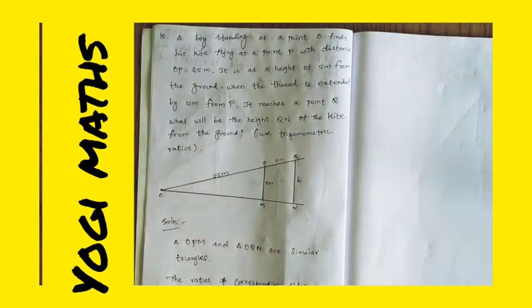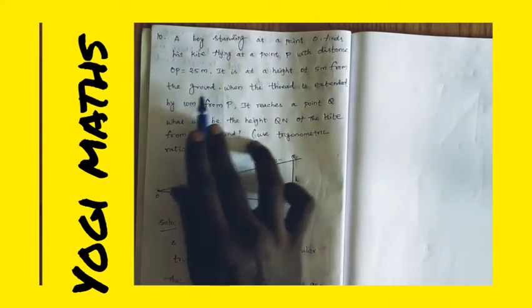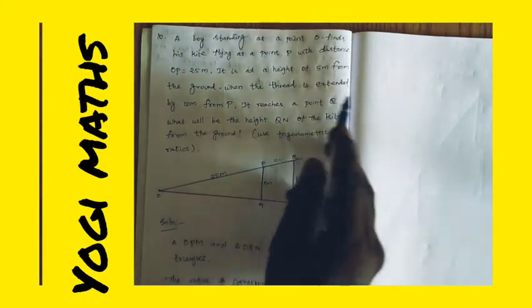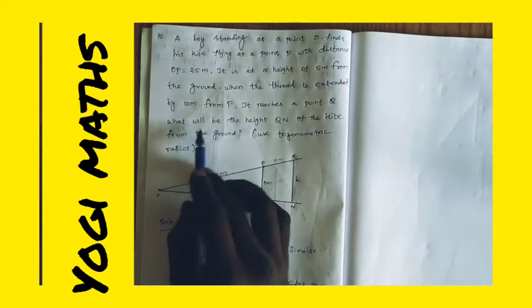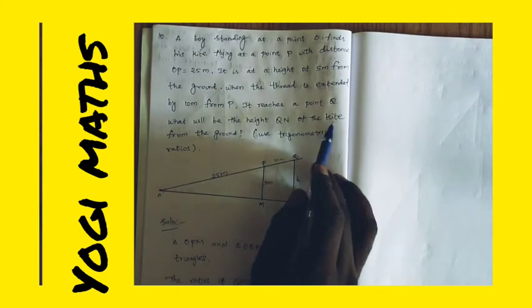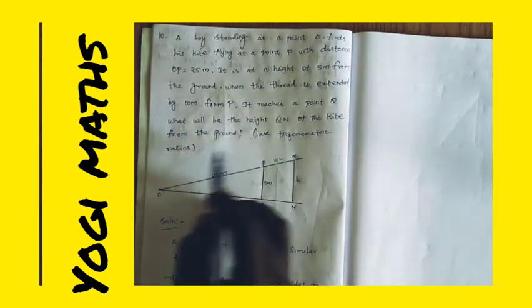A boy standing at a point O finds his kite flying at a point P with a distance OP equal to 25 meters. It is at a height within 5 meters from the ground. When the thread is extended by 10 meters from P, it reaches at a point Q. What will be the height QN of the kite from the ground? You can use trigonometric ratios.